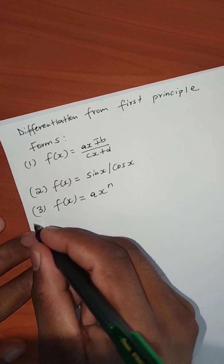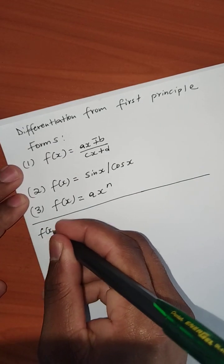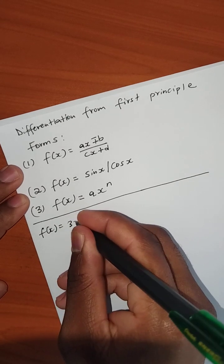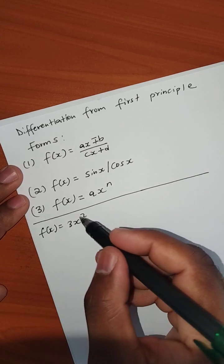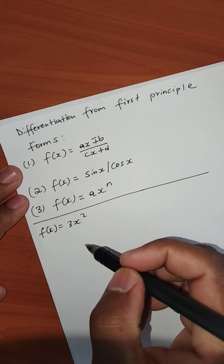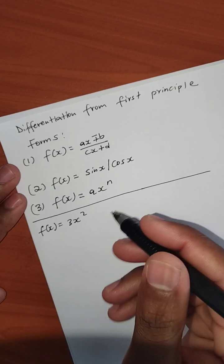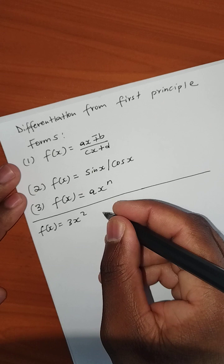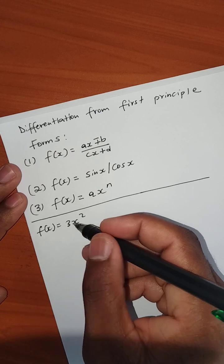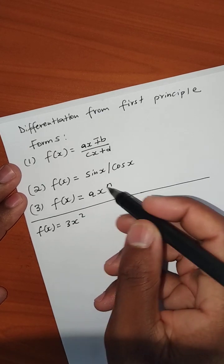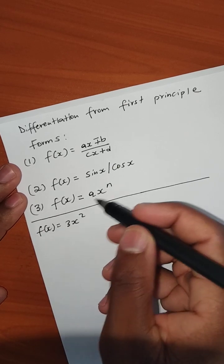I've already discussed the first two forms, and today I'll focus on the third one. For example, you might get something like: differentiate 3x² from first principle. When you compare 3x² with the standard form ax^n, here a = 3, x is x, and n = 2.